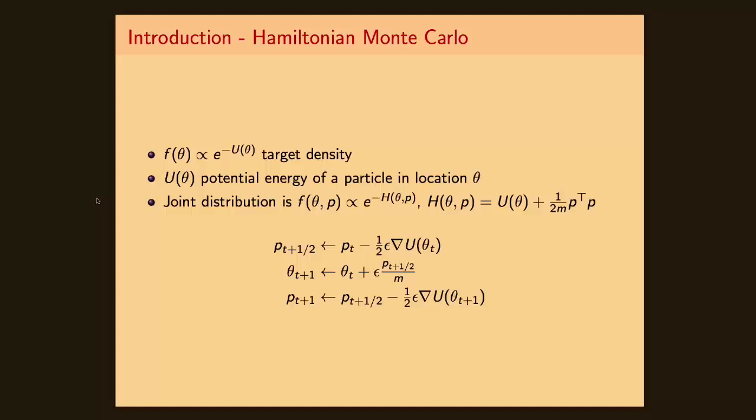The problem is that if your target distribution has very peaked gradients or the scales of the gradients vary across dimensions, then your momentum variable can get really large, so that you can take overly large steps.